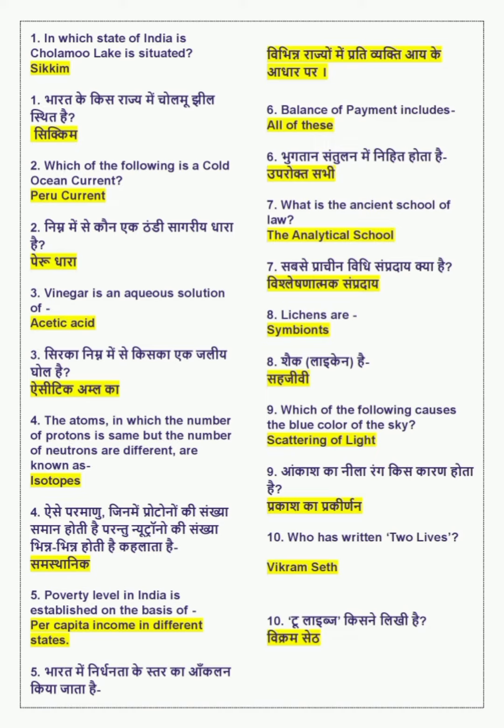The atoms in which the number of protons is same but the number of neutrons are different are known as isotopes.